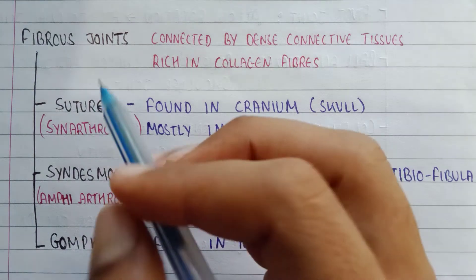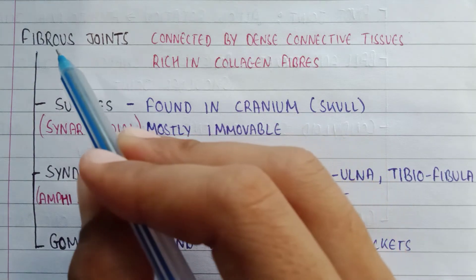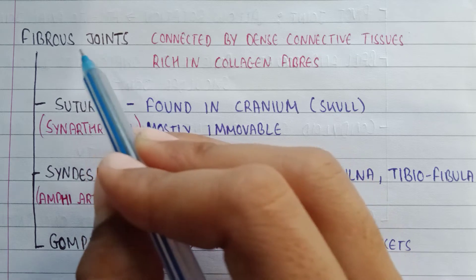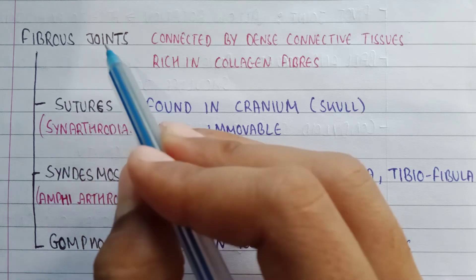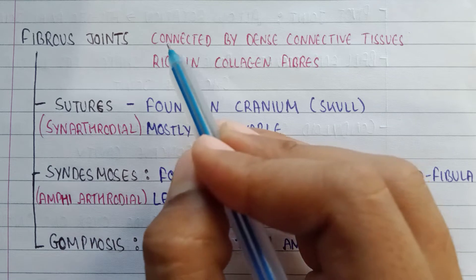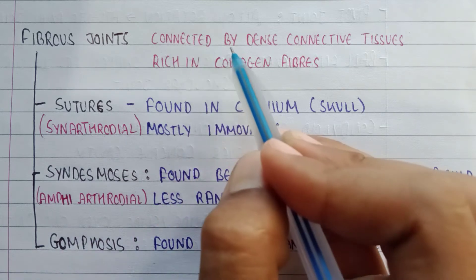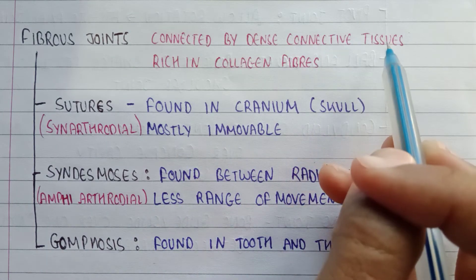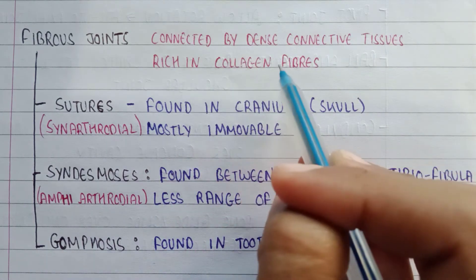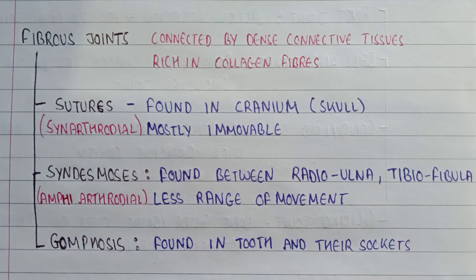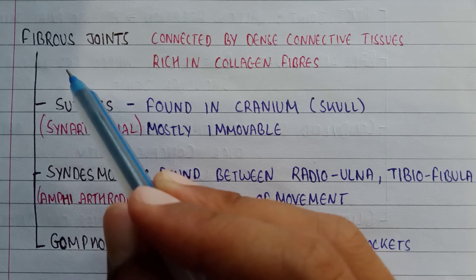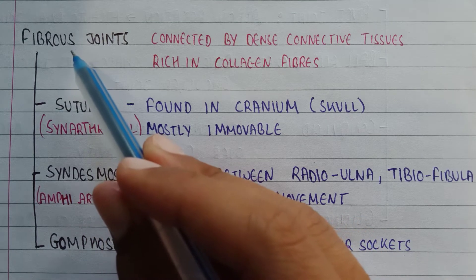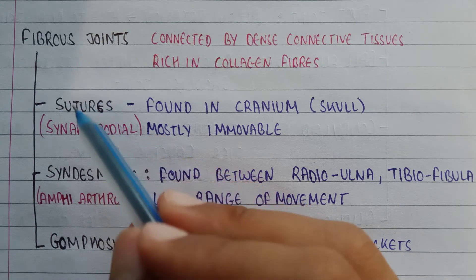Fibrous joints. In this video we will know about fibrous joints. The definition of fibrous joints: these are the joints which are connected by dense connective tissues rich in collagen fibers. Now let's see the types of fibrous joints. We have divided fibrous joints into three types.